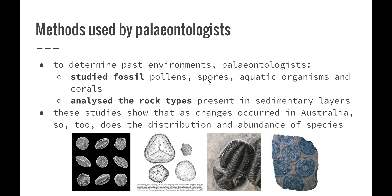Some methods used by paleontologists to determine past environments include the study of fossil pollens, spores, aquatic organisms and corals, as well as the analysis of the rock types present in sedimentary layers. Studies of past environments in Australia have revealed that as changes occur, so too does the distribution and abundance of particular species.